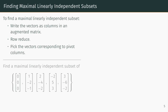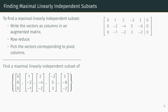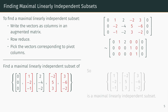Let's try this on an example. First, we put the vectors in an augmented matrix and then row reduce. We see the second, fourth, and fifth columns are the pivot columns. Therefore, a set consisting of the second, fourth, and fifth vectors would be a maximal linearly independent subset.